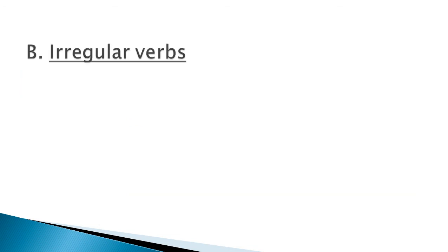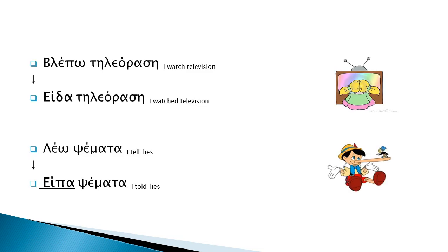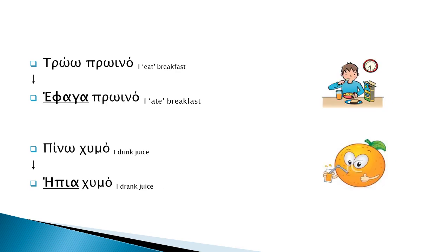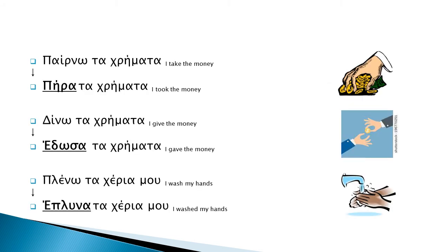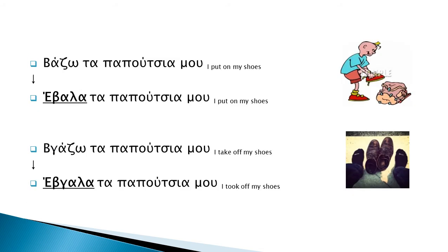Let's look now at irregular verbs in the simple past tense. Βλέπω τηλεόραση → Είδα τηλεόραση. Λέω ψέματα → Είπα ψέματα. Τρώω πρωινό → Έφαγα πρωινό. Πίνω χυμό → Ήπια χυμό. Παίρνω τα χρήματα → Πήρα τα χρήματα. Δίνω τα χρήματα → Έδωσα τα χρήματα. Πλένω τα χέρια μου → Έπλυνα τα χέρια μου. Βάζω τα παπούτσια μου → Έβαλα τα παπούτσια μου.